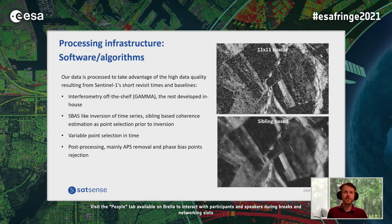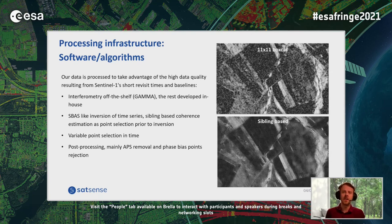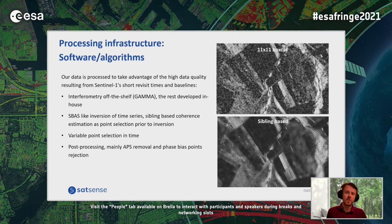Sibling-based coherence allows us to quickly add new images towards the end of the time series and gives a robust variable point selection over time — we don't have to worry about network selection, skipping winter acquisitions, or points that appear and disappear over time. Post-processing mainly consists of atmospheric phase screen removal and dealing with phase bias, which has been covered extensively at this Fringe meeting. We see a consistent apparent subsidence trend in our data over certain types of ground cover — particularly pasture, arable land, and moorlands — which is not real but is a cosmetic phase bias.